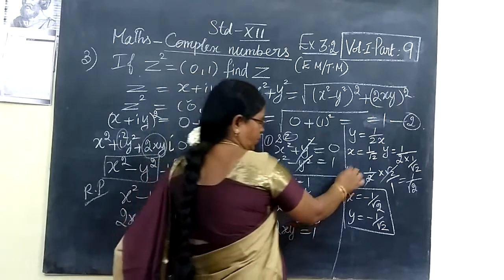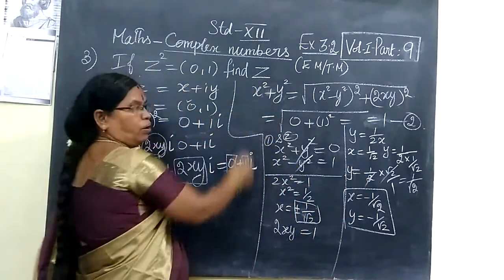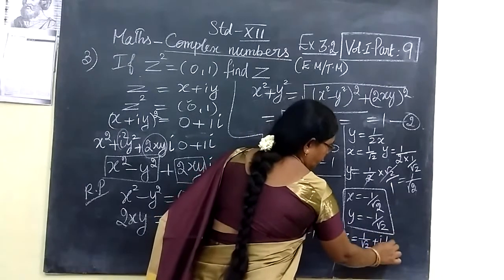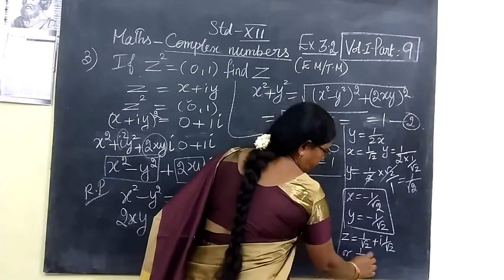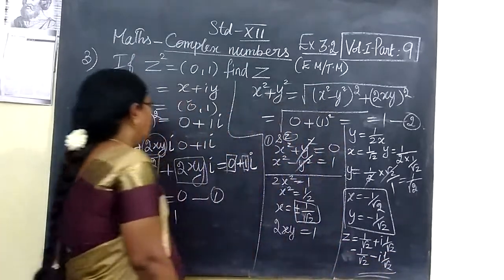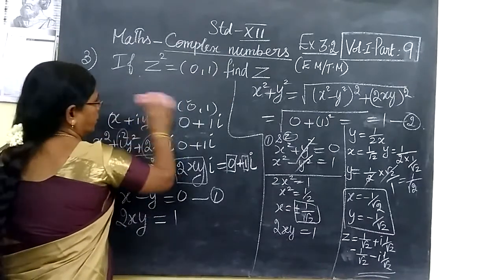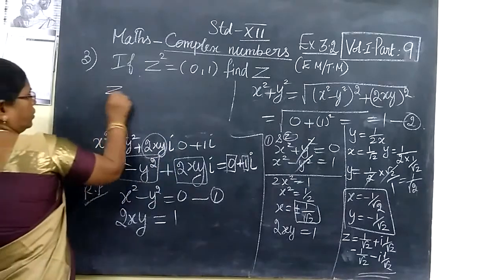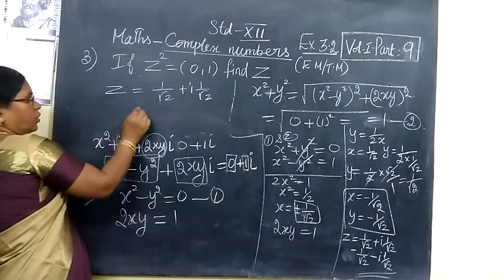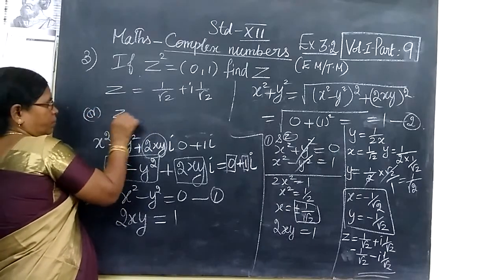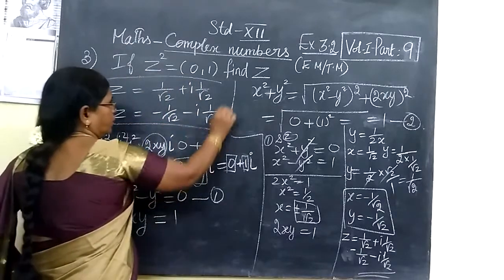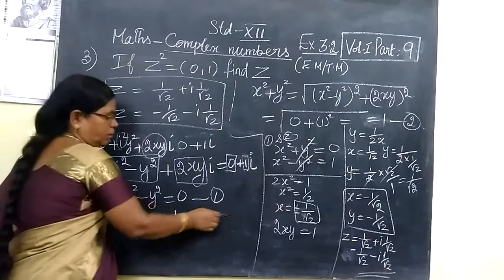Here we write the y values and then the value of z. The value of z equals: when taking the plus value, z = 1/√2 + i·(1/√2). And when substituting the minus value, z = −1/√2 − i·(1/√2). So we are getting 2 values for z. Thank you.